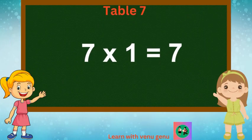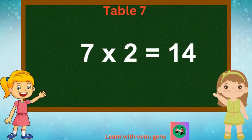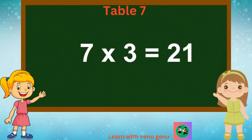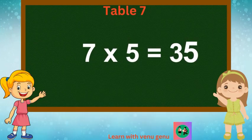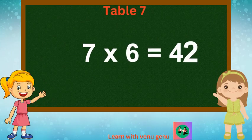Table of 7. 7 1s are 7, 7 2s are 14. 7 3s are 21, 7 4s are 28. 7 5s are 35, 7 6s are 42.